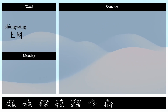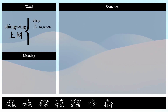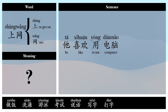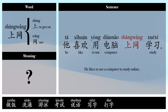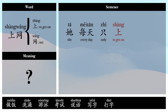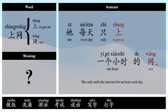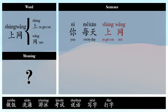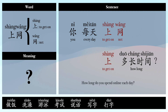上网 — to go online. Example sentences: 他喜欢用电脑上网学习。(He likes to use the computer to go online and study.) 他每天只上一个小时的网。(He only goes online for one hour each day.) 你每天上网上多长时间? (How long do you go online each day?)